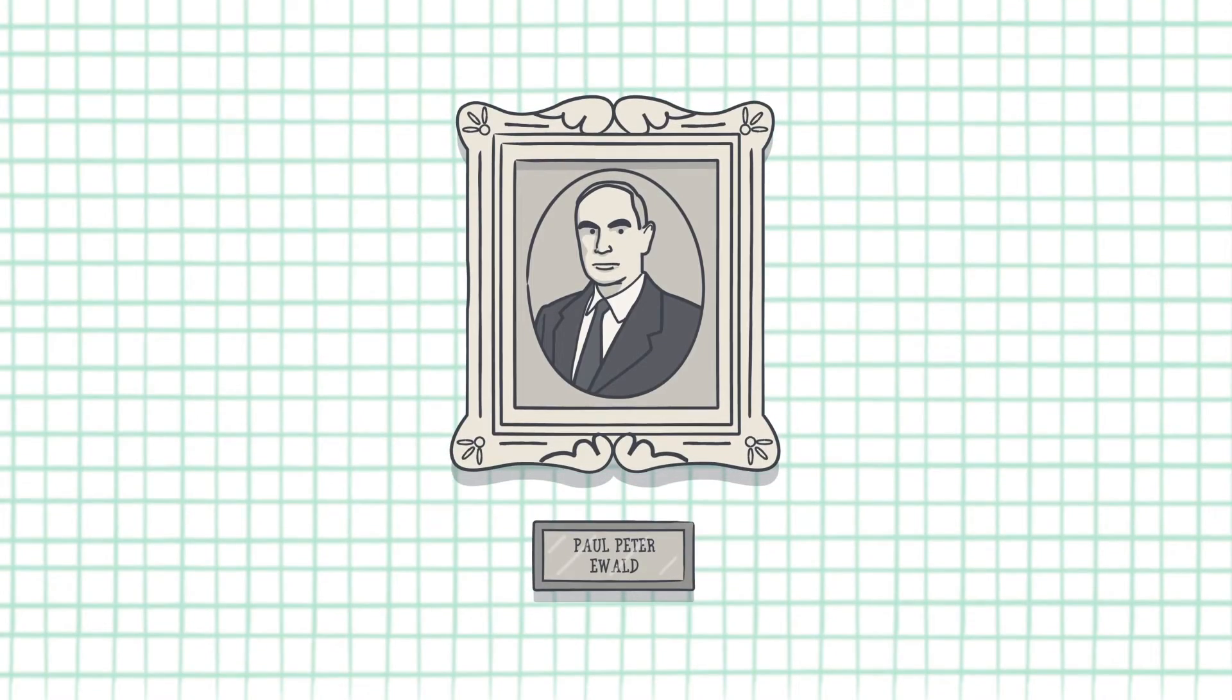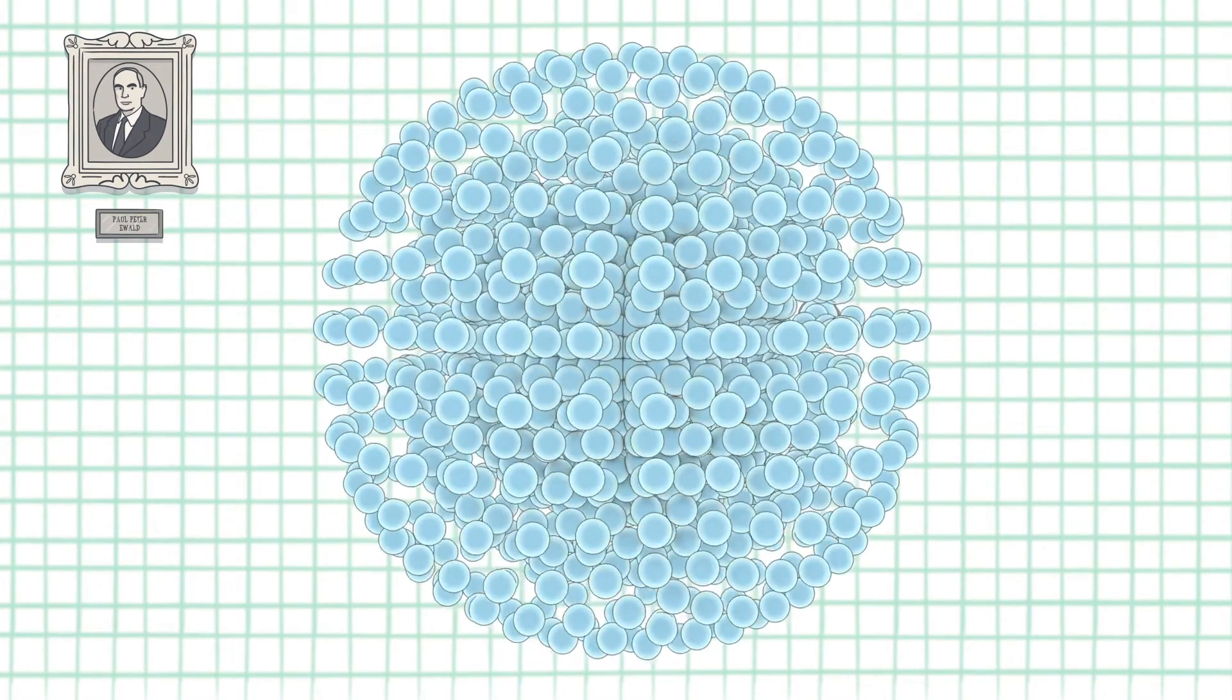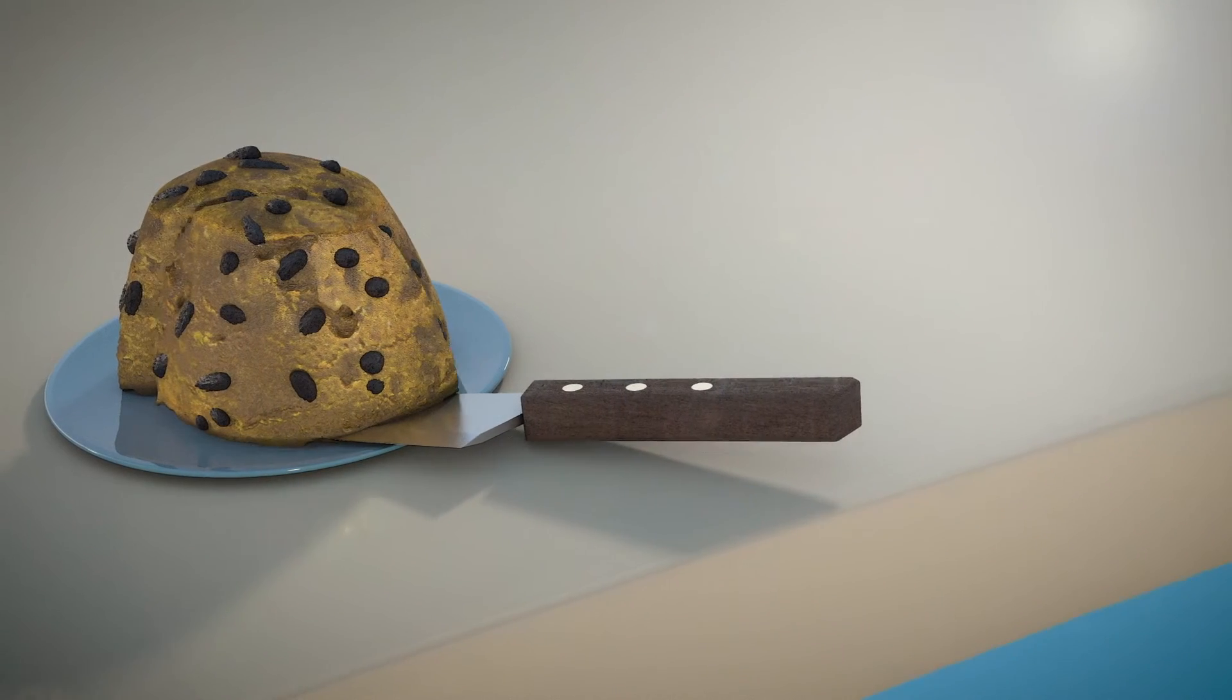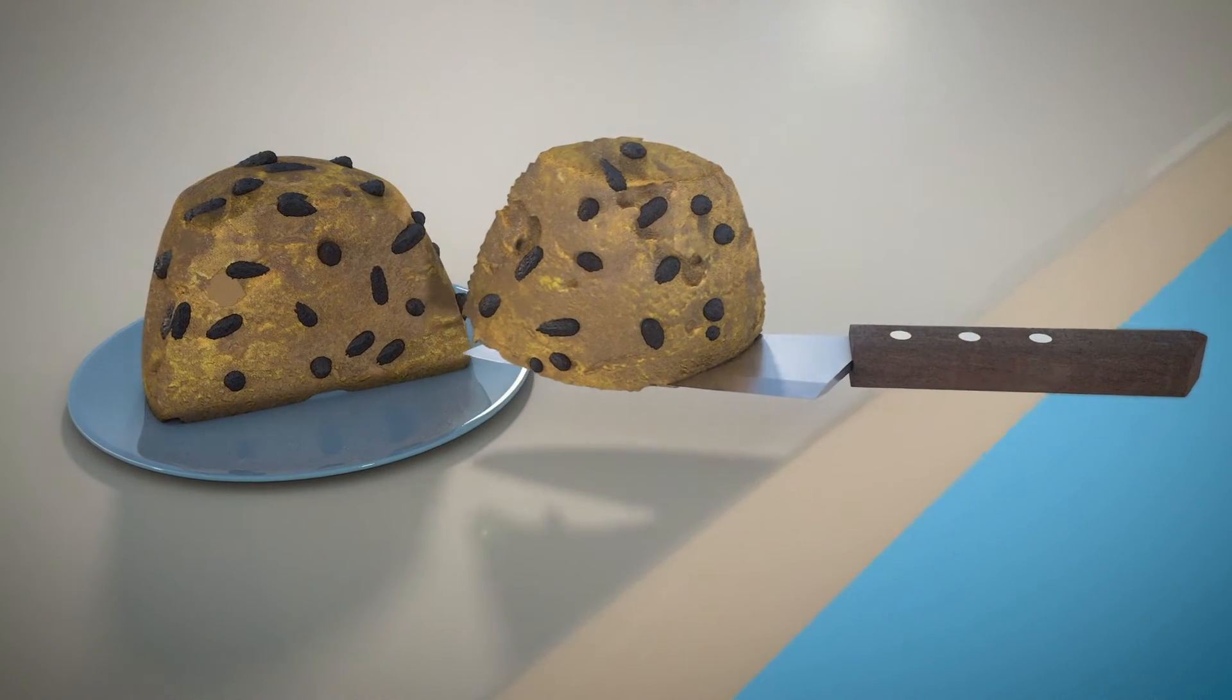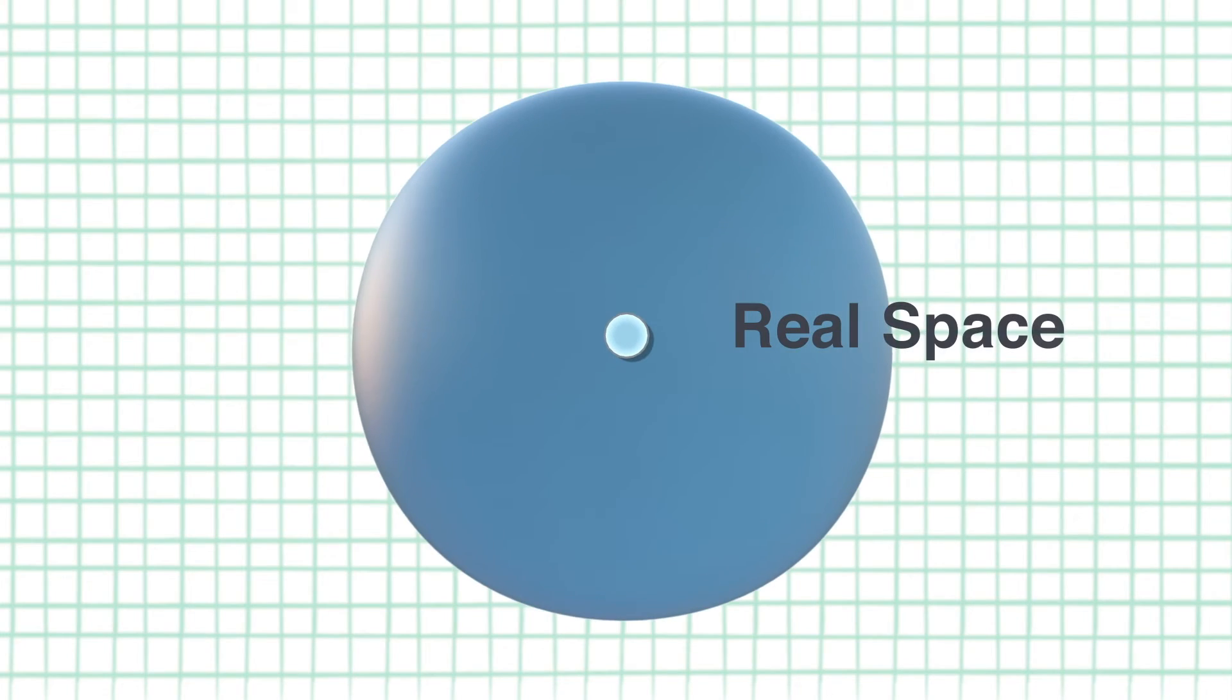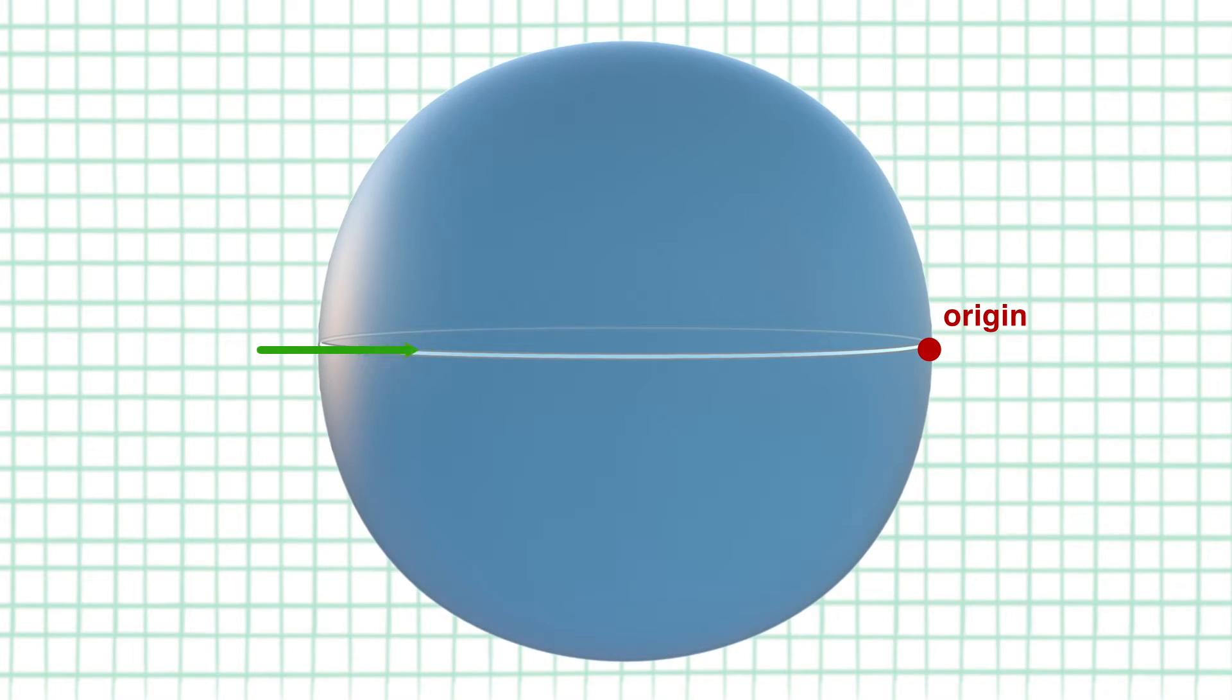Paul Peter Ewald in the 1920s visualized the diffraction spots in 3D much like this pudding. A slice of this pudding is like the 2D array of spots that we observe on the detector. Unlike a sphere in real space where the origin is in the middle of the sphere, in reciprocal space the origin is on the surface of the sphere. This is the point where the x-ray leaves the reciprocal space.